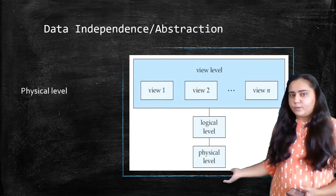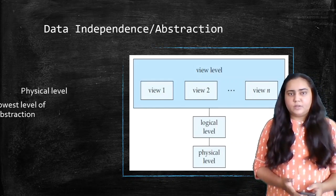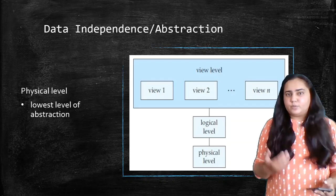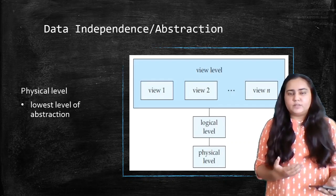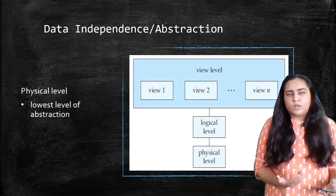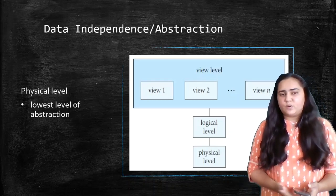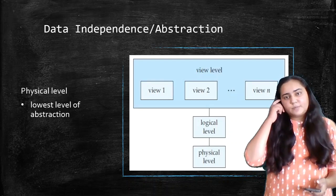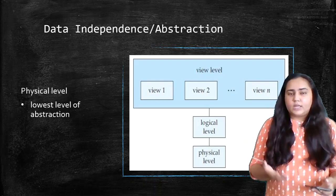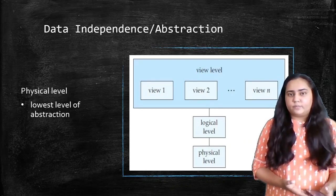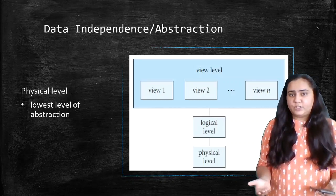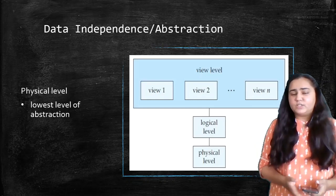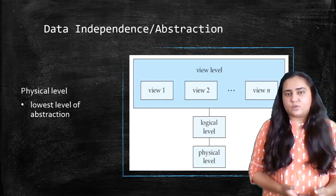The first, or bottom-most, level is the physical level, which is the lowest level of abstraction. Abstraction means hiding something — when you are hiding data from someone, that is called abstraction. Abstraction is necessary in any DBMS for it to work efficiently and for people to be able to use it efficiently.